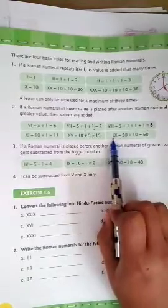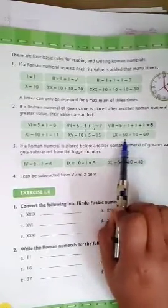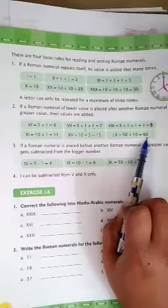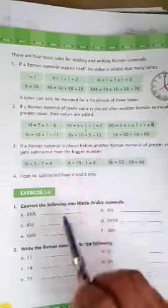Here, we use L for 50 and X for 10. When we add this, we get 60. So, next the third is, if Roman numeral is placed before another Roman numeral of greater value, it gets subtracted from the bigger number.